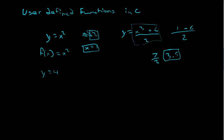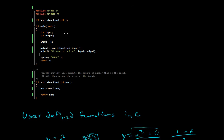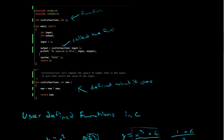Let's look at an example program. In this program, this is my function — this is where I've defined what the function does. And right here is where I've called the function. To begin, we have to tell the computer — the compiler — that we have a function we want to use. We declare this with what's called a function prototype.